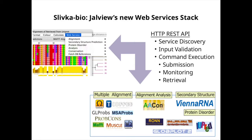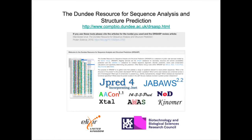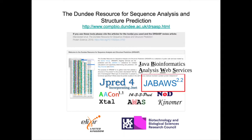The aims for Slivka Bio are that it should be scalable — we've got 2,000 plus users launching Jalview every day. It should be easy to configure, add new services, and also easy to install locally for Jalview power users. This is all under the auspices of the Dundee Resource for Sequence Analysis and Structure Prediction, an Elixir UK resource funded by the Biotechnology and Biological Sciences Research Council of UKRI. Slivka Bio will eventually replace the system which currently provides services for Jalview.